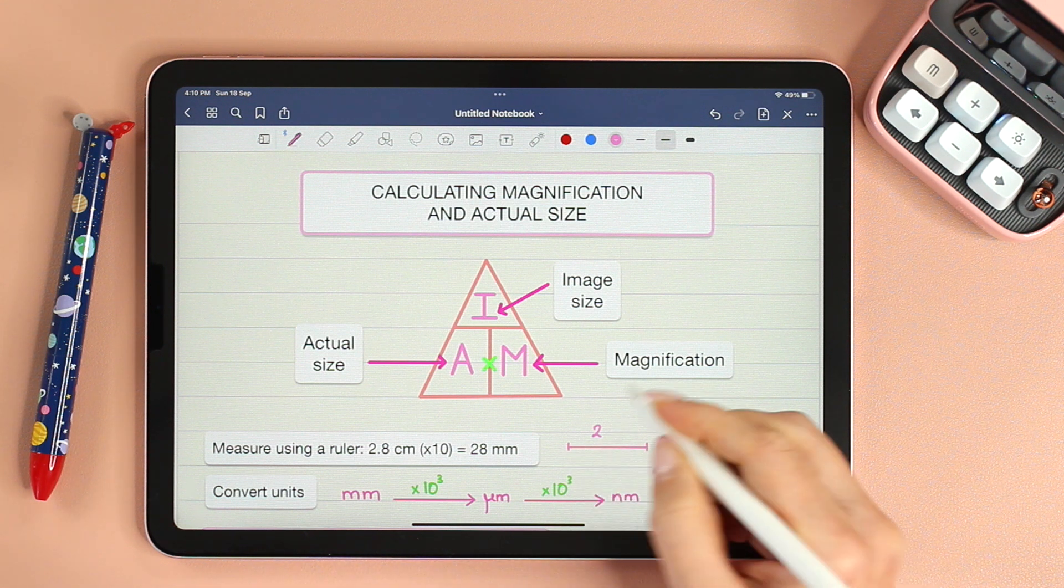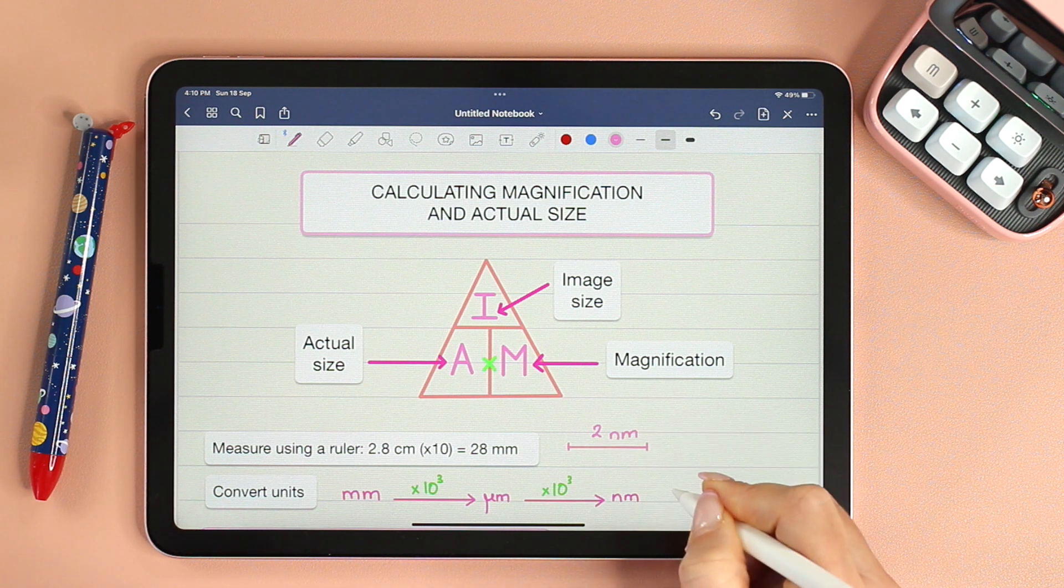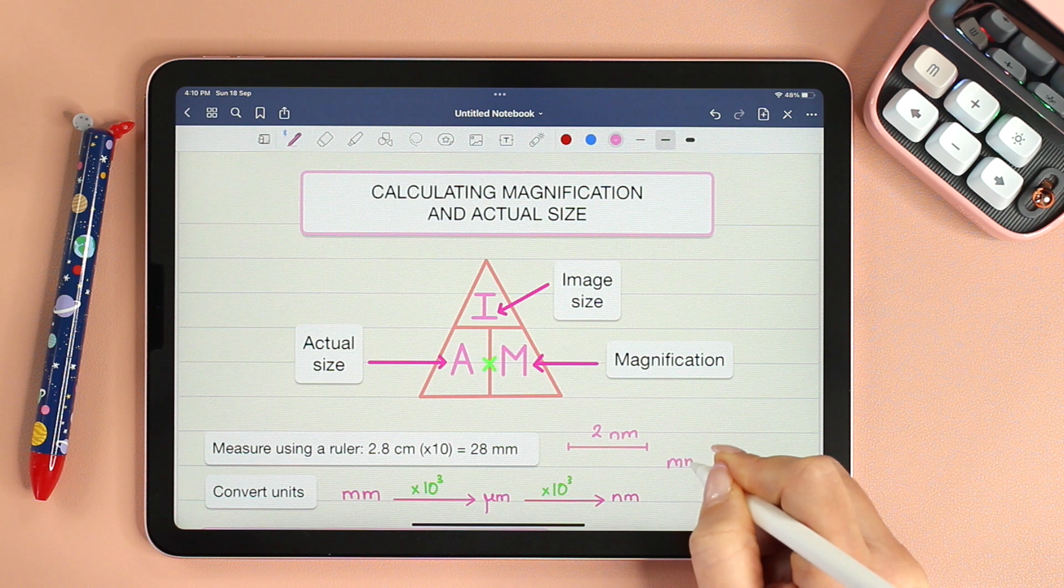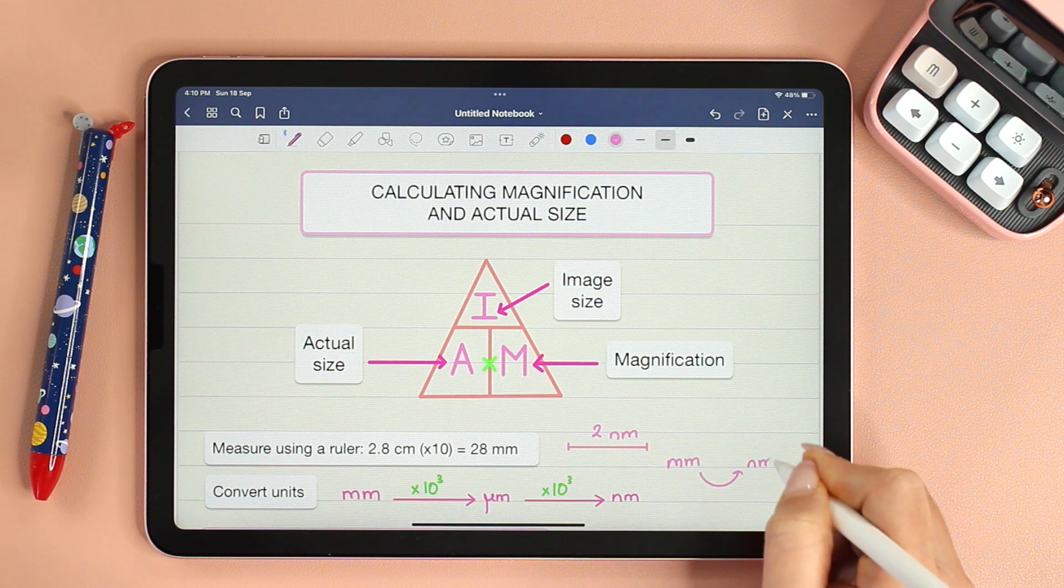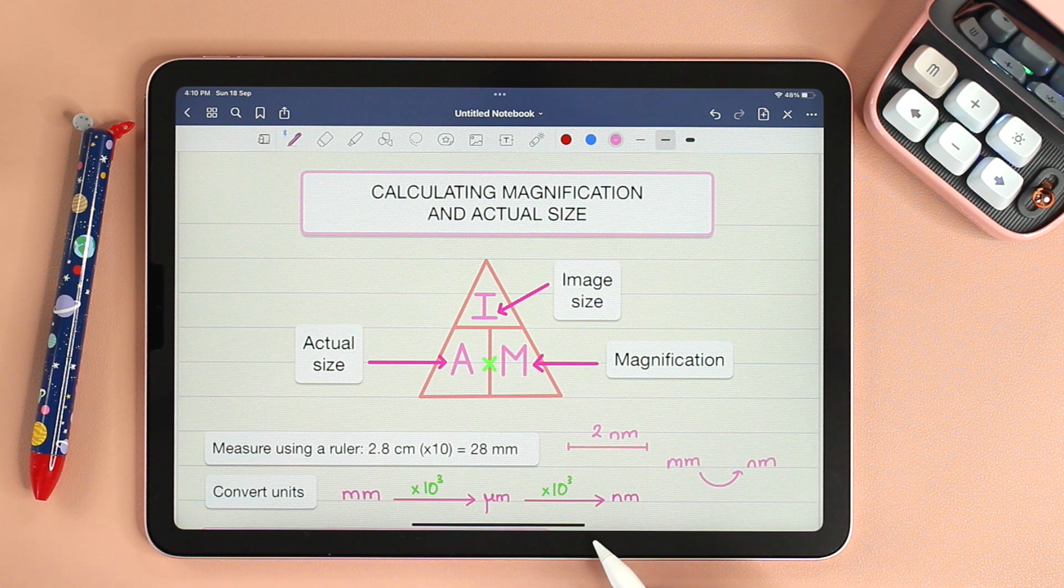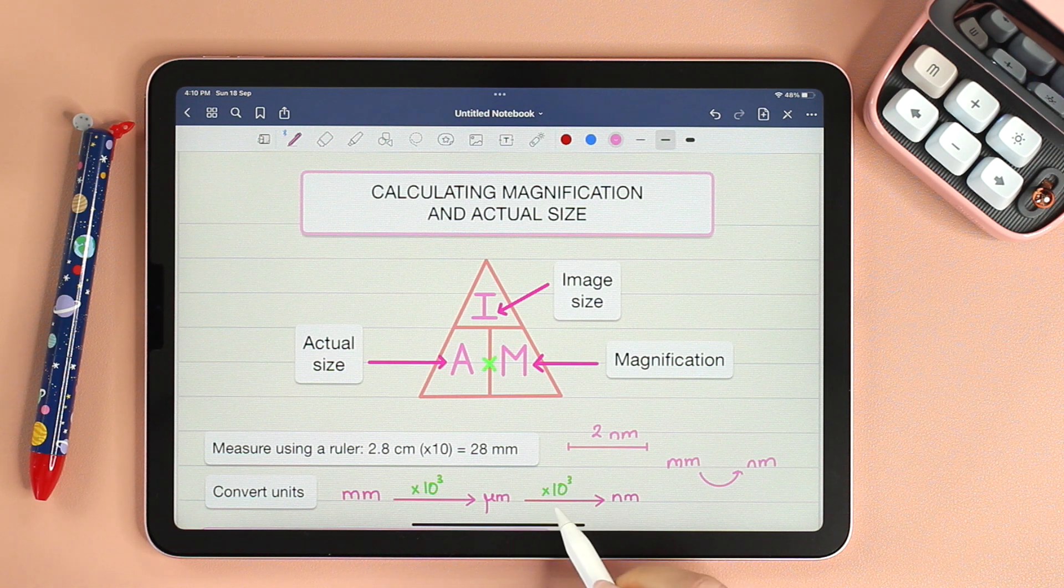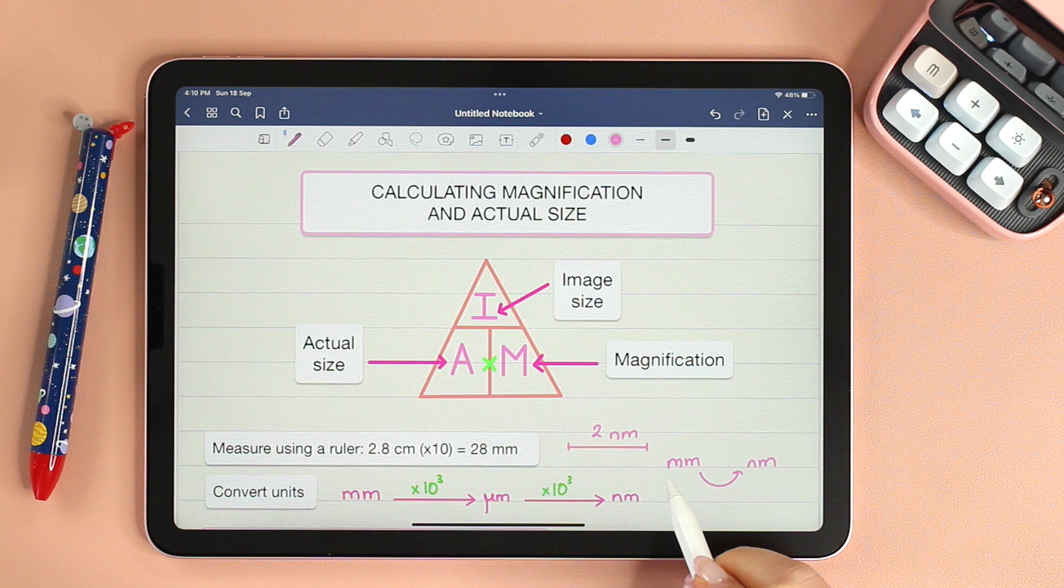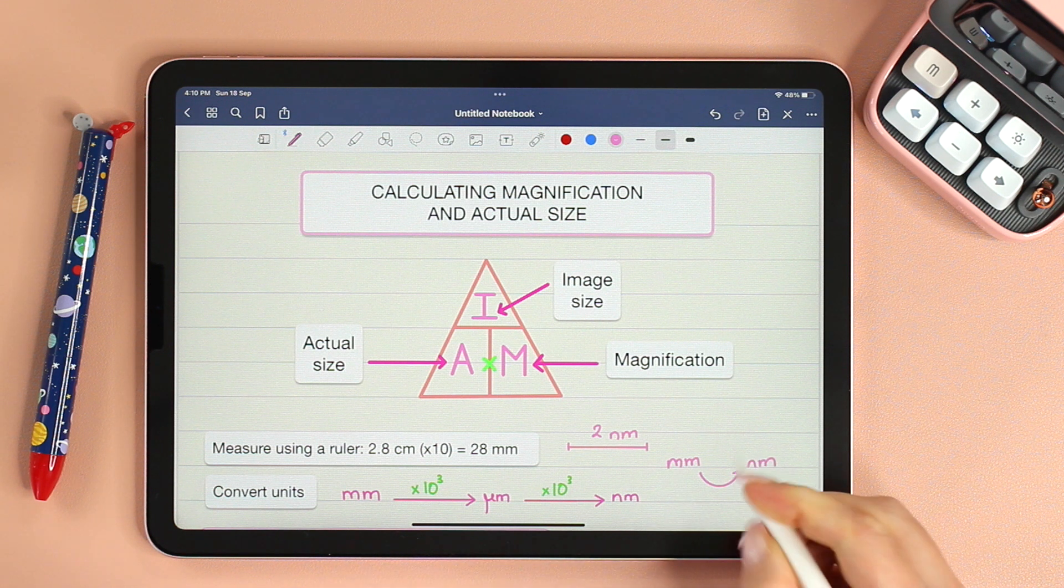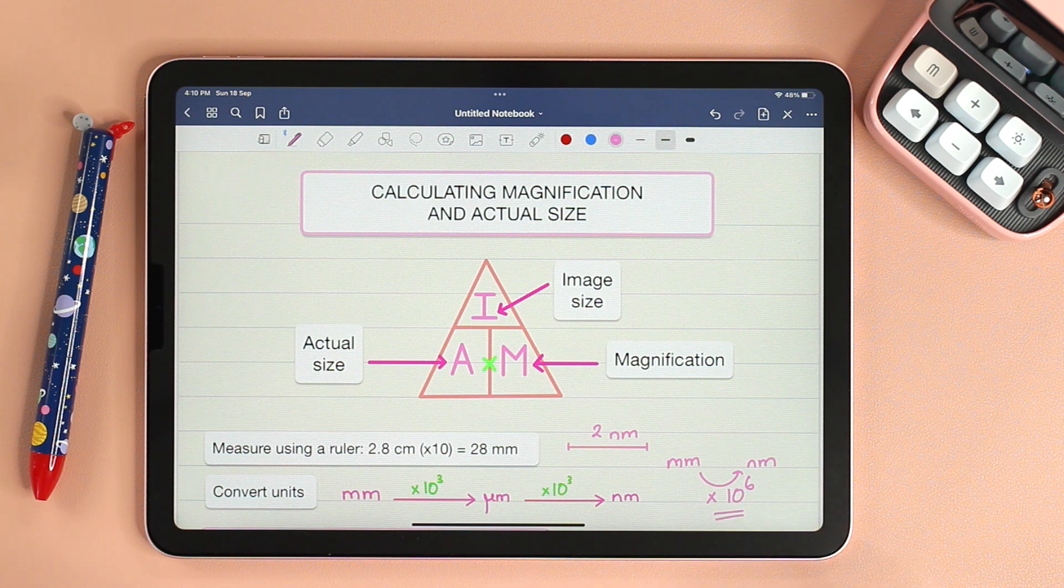If the actual size on the scale bar is in nanometer, then you'll need to convert from millimeters to nanometers. As you can see in the conversion of units, from millimeter to micro it's 10 to the power of 3, and from micro to nano it's an additional 10 to the power of 3, which means if you want to convert from millimeters to nanometers, that's going to be 10 to the power of 6.